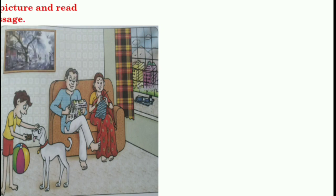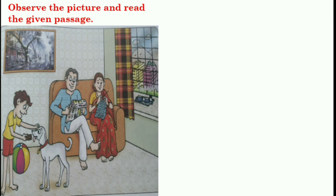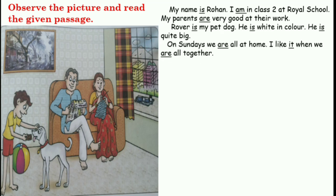Now children, observe this picture carefully and let us read the given passage that is related to this picture. My name is Rohan. I am in class 2 at Royal School. My parents are very good at their work. Rover is my pet dog. He is white in colour. He is quite big. On Sundays, we are all at home. I like it when we are all together.